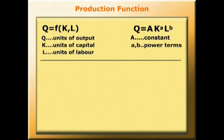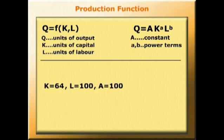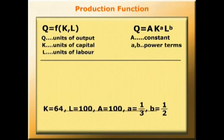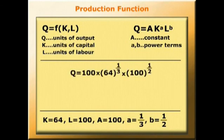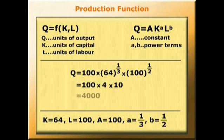To illustrate such a relationship, let's suppose that K is equal to 64, L equals 100, big A equals 100, little a equals a third, and little b equals a half. Let's work out what the level of output would be. So we're solving for Q. Q equals 100 times 64 to the third times 100 to the half. That is 100 times 4 times 10, which equals 4000.